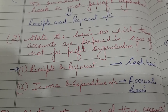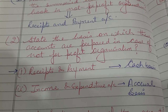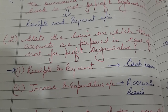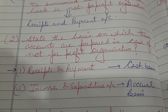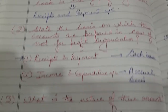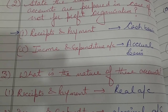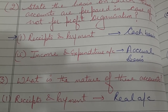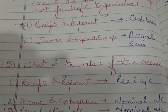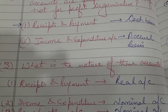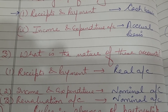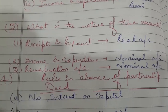State the basis on which accounts are prepared in a not-for-profit organization. Receipt and Payment Account is prepared on cash basis, and Income and Expenditure Account is prepared on accrual basis. Regarding the nature of these accounts: Receipt and Payment is a real account, and Income and Expenditure is a nominal account. Similarly, Revaluation Account is also a nominal account.